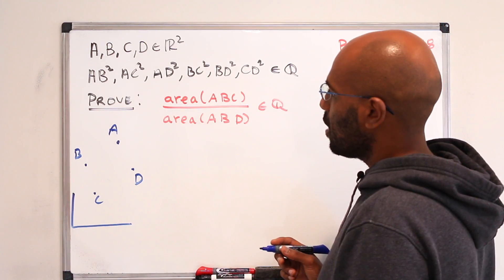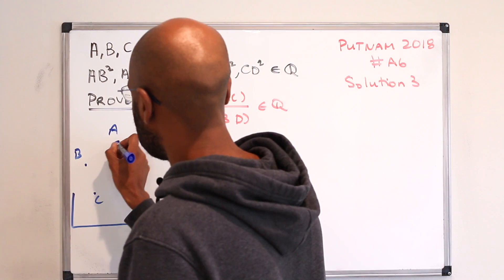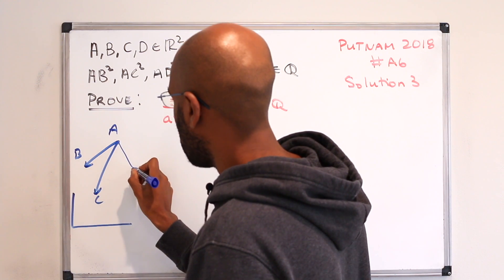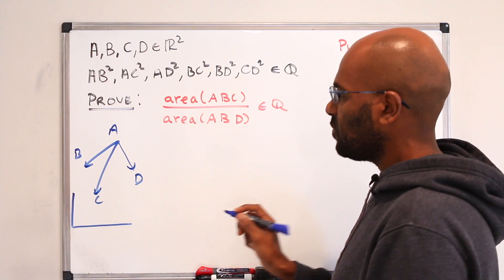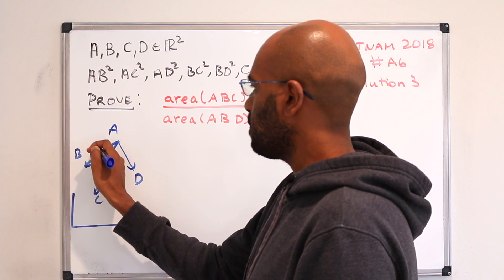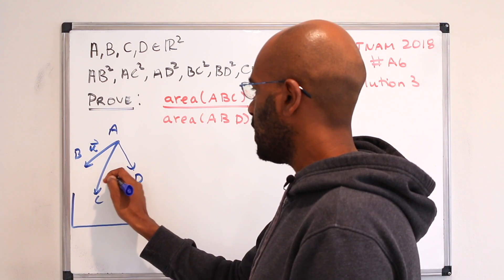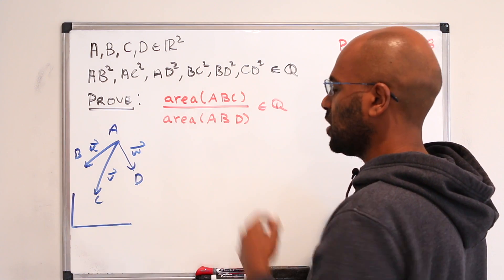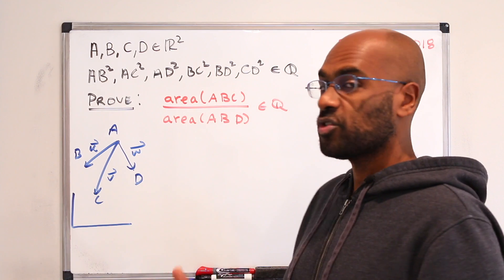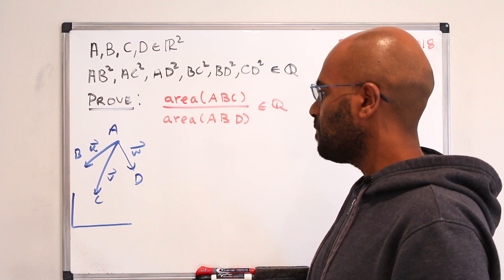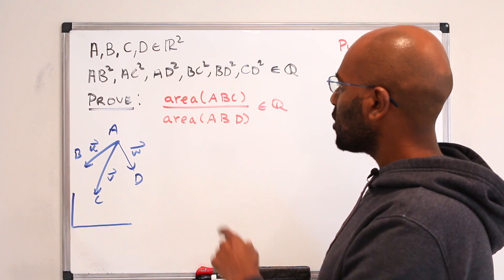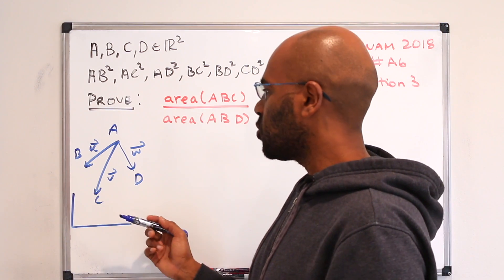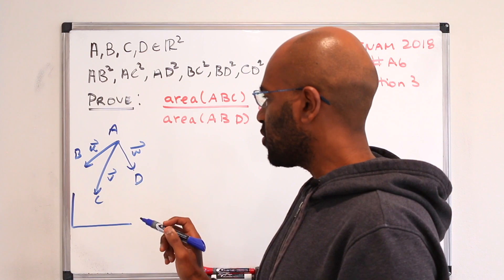To begin, we're going to draw in some vectors — the vectors emanating from A to the other points B, C, and D — and we're going to give these vectors names: U, V, and W respectively. I'll often omit the actual vector notation on top and just refer to them as U, V, and W. We can actually express these areas in terms of linear algebraic expressions in these vectors.